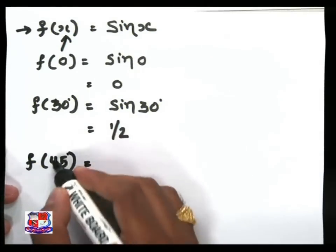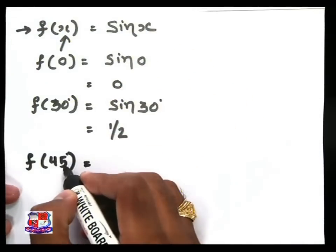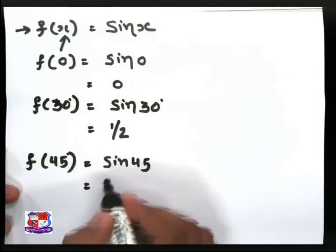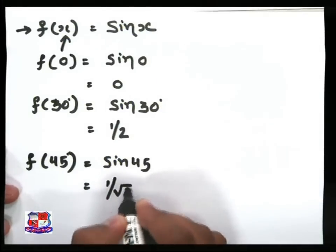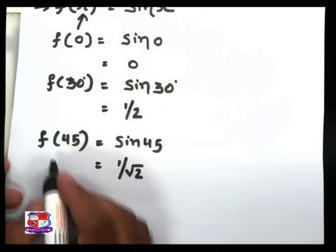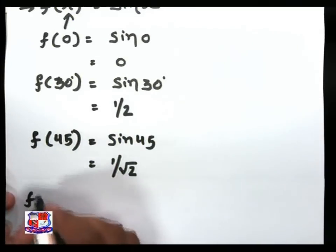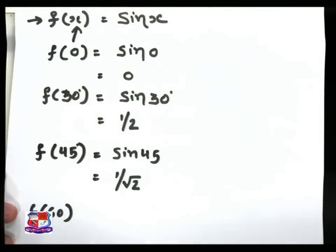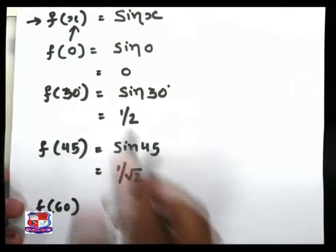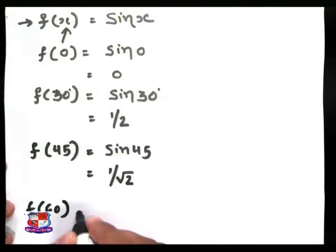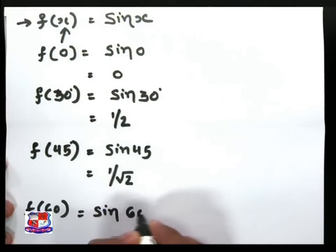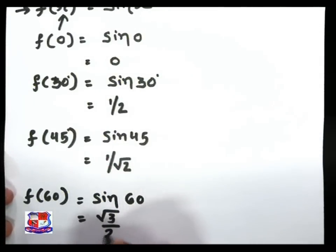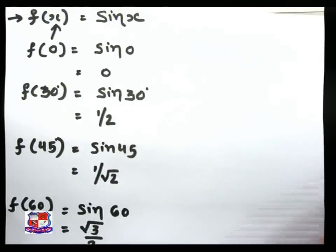We can write 45 degrees here, so replace x by 45 degrees. Our answer is sin 45 is equal to 1 upon root 2. Similarly for f of 60 degrees, replace x by 60 degrees, so we write sin 60 degrees, and sin 60 degrees equals root 3 by 2.